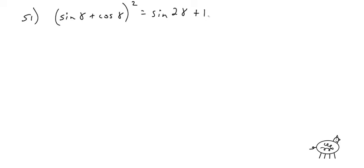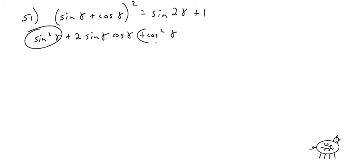I'm just going to FOIL this out, and I get sine squared of gamma plus 2 sine gamma cosine gamma plus cosine squared of gamma. And again, you're always looking for your identities — we have sine squared plus cosine squared equals 1.